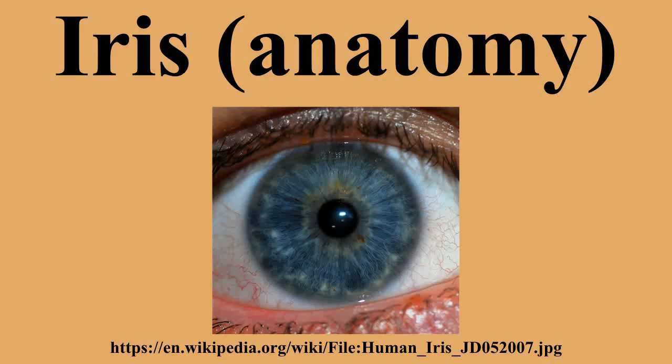The iris is divided into two major regions. The pupillary zone is the inner region whose edge forms the boundary of the pupil. The ciliary zone is the rest of the iris that extends to its origin at the ciliary body. The collarette is the thickest region of the iris, separating the pupillary portion from the ciliary portion.